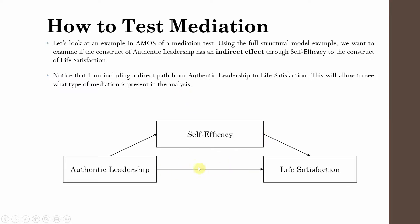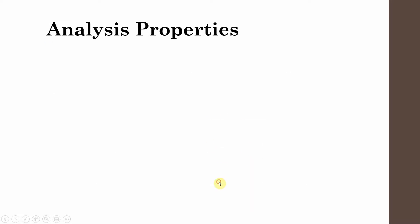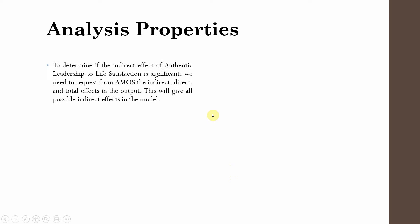There is a direct path which is C-complement, and then there are the indirect paths from authentic leadership to self-efficacy (path A) and from self-efficacy to life satisfaction (path B). The direct path is C-complement. Without the presence of self-efficacy, this would have simply been C. So how do we run this in AMOS?